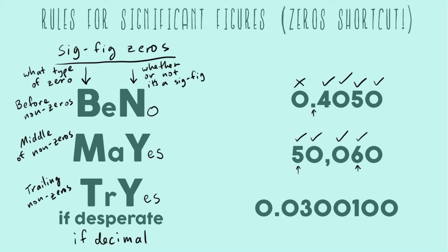And then our last zero is a trailing zero. And there is no decimal point in this number. So this means no. This is not going to be a sig fig. And so Ben was not desperate in that case.